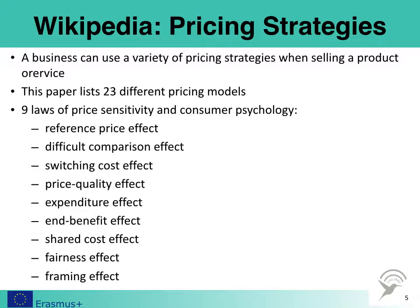The nine laws are: the reference price effect, the difficult comparison effect, switching cost, price quality, expenditure, end benefit, shared cost, fairness, and framing. These are consumer psychology issues which you should consider when selecting your pricing model.